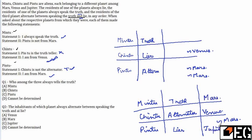Since Pintu is from Venus and Mintu cannot be from Mars, Mintu is from Jupiter. Check Pintu's statements: he says 'Chintu is not the alternator,' but Chintu is the alternator — that statement is false. His last statement 'I am from Mars' is also false since he is from Jupiter. All conditions are satisfied. So two valid cases are formed: in Case 1, Chintu is a liar; in Case 2, Chintu is an alternator. Chintu being a truth-teller is not possible.